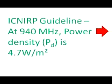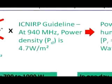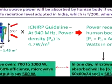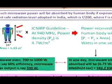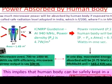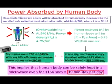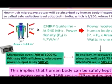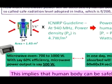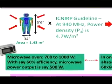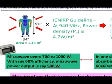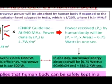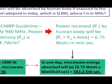What this exposure really leads to: the power density at 940 MHz is 4.7 Watt per meter squared. Power density multiplied by area gives the power absorbed by the human body. Modeling the human body as a cylinder — 2πr times height — with a 34-inch waist and 5 to 6 foot height, the area is 1.43 meters squared. The power received by the human body will be 6.75 Watt in 1 second.